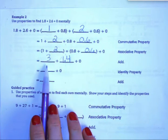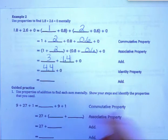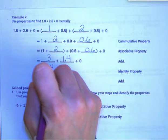If we go ahead and add our whole numbers, we have 4 and 4 tenths plus 0. Using the identity property, we know we don't even have to add. It just equals 4 and 4 tenths.